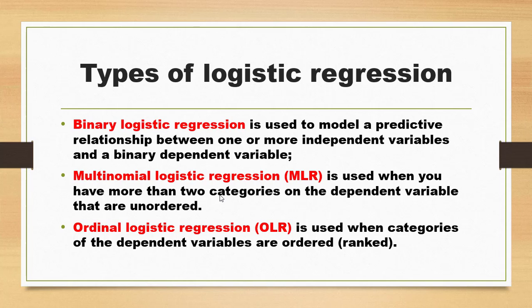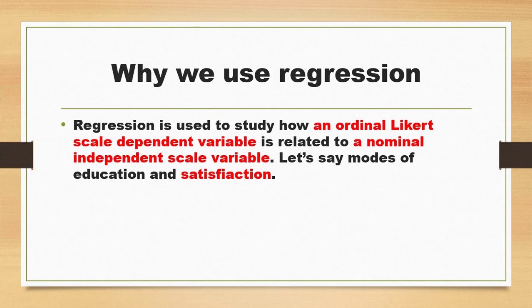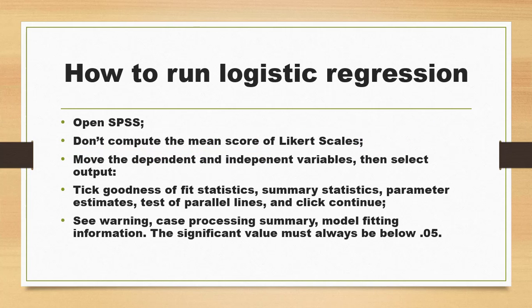To recap: binary logistic regression has one or more independent variables and one binary dependent variable. Multinomial is used when the dependent variable is not ordered and has more than two categories. Ordinal logistic regression requires the dependent variable to be ordered or ranked. Regression is used to study how an ordinal Likert scale dependent variable is related to a nominal independent variable — for example, modes of education and satisfaction.